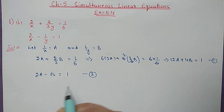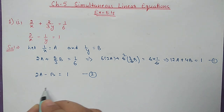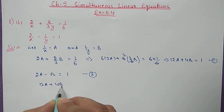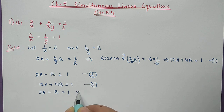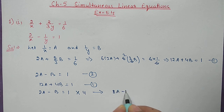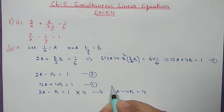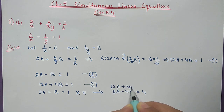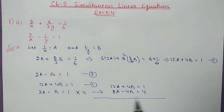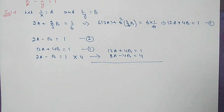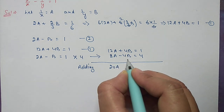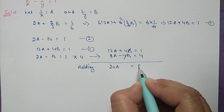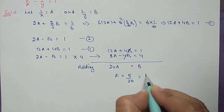The second equation is 2a minus b equal to 1. If we multiply the second equation by 4, the b coefficient will become the same. So we get 8a minus 4b equal to 4. Writing the first equation above: 12a plus 4b equal to 1. Now the b coefficient is the same with opposite signs, so we add these two equations. Adding equation 1 and 2: 12 plus 8 gives 20a, the 4b terms cancel out, and 1 plus 4 gives 5. So a equals 5/20, which is 1/4.